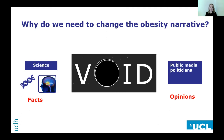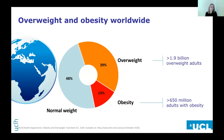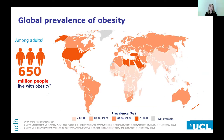More than half of the global population are living with either overweight or obesity, and these numbers continue to rise globally. There isn't one single country that has managed to stop the year-on-year increase in the prevalence of overweight and obesity. Looking at this slide, the mid-orange colour is where 20 to 29 percent of the population are living with obesity, and the dark orange — most of America and the Middle East — is where more than 30 percent are living with obesity.